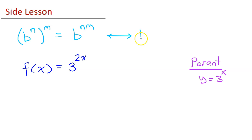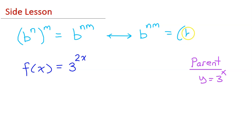So if we start with b to the n times m power, we can rewrite this as b to the n power to the m power.